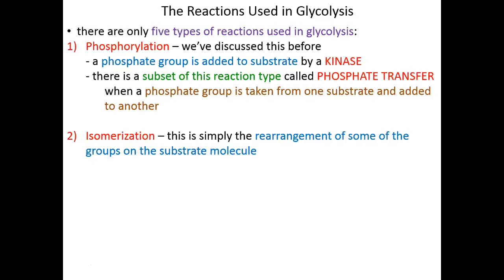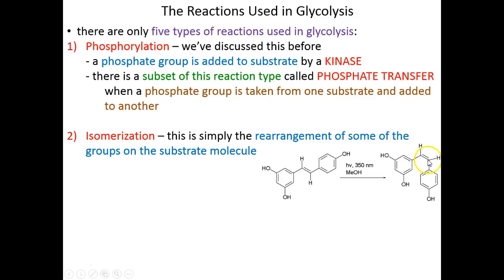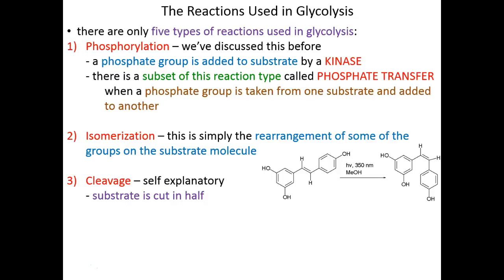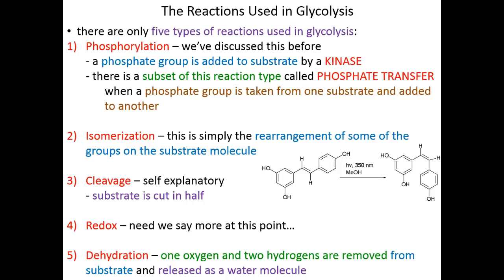The second reaction type is isomerizations — rearrangements of groups on the molecule. No atoms are lost or gained; they're only rearranged within the original substrate molecule. The third reaction type is cleavage, where the substrate is cut into two smaller products. Redox reactions we've already covered. And dehydration reactions, which you're relatively familiar with — the formation of a peptide bond was a dehydration reaction, as is addition of a nucleotide onto a growing DNA or RNA chain. Dehydration is when one oxygen and two protons are removed from the substrate, coming together as water that is released from the reaction.